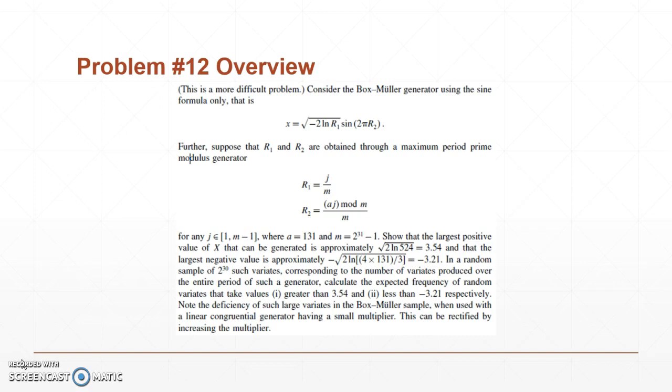Problem number 12 uses the Box-Muller generator. The Box-Muller generator is the formula that you see below, which x equals the square root of negative 2 natural log of r1 times the sine of 2 pi r2.